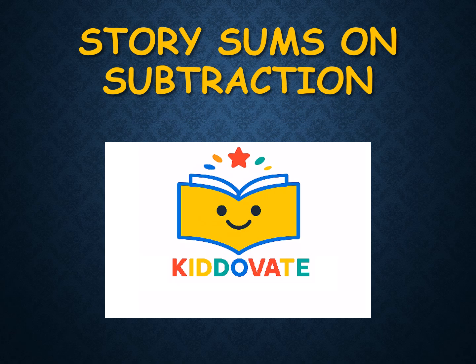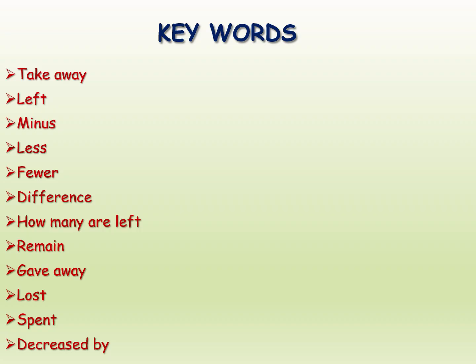Hello kids, welcome to Kiddo8. Today we are going to learn story sums and subtraction. Here is the sum key — keywords about subtraction: take away, left, minus, less, fewer, difference, how many are left, remain, gave away, lost, spent, decreased by. These all are keywords about subtraction.